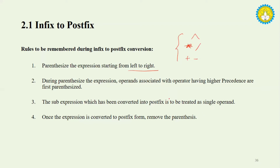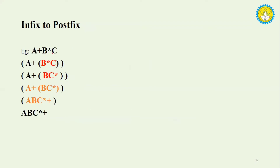An expression converted into postfix is treated as a single operand. For example, A plus B into C: B into C has higher priority, so we convert it first to B C star, which becomes a single operand. Then A plus that gives A B C star plus. Another example: A plus B divided by C minus D — B divided by C gives B C slash, and combined with left-to-right associativity gives A B C slash plus D minus.